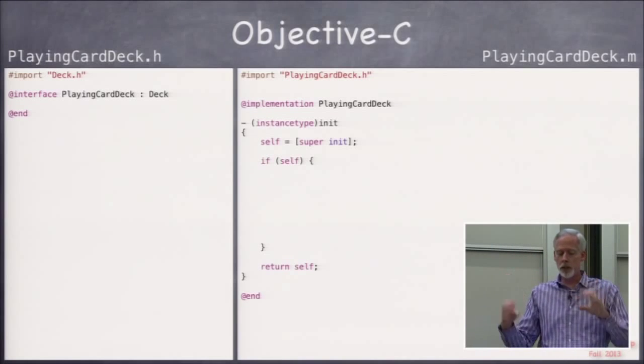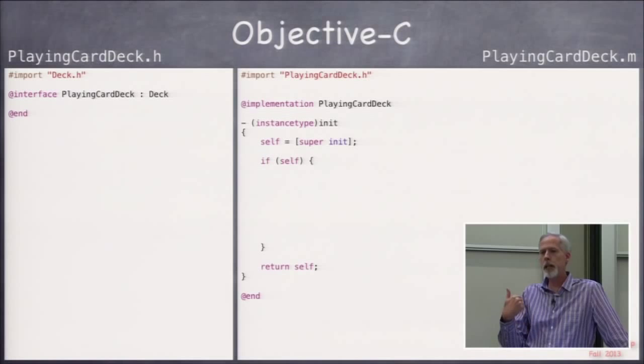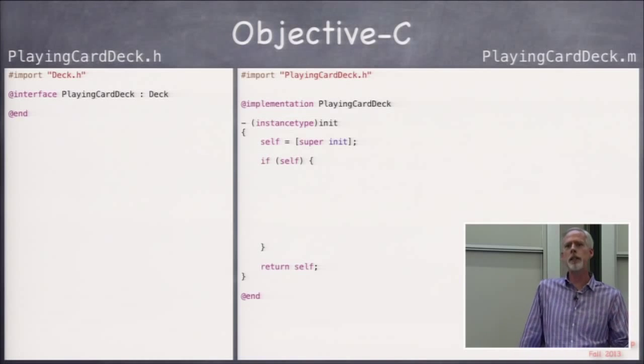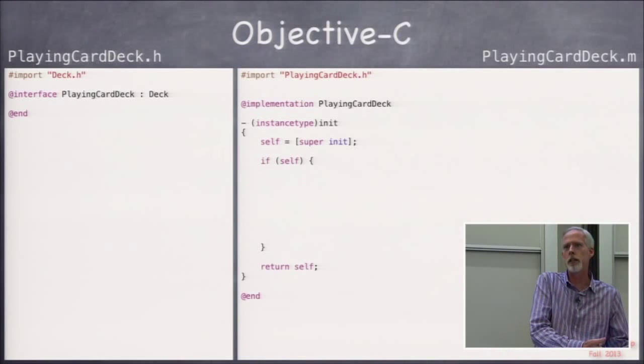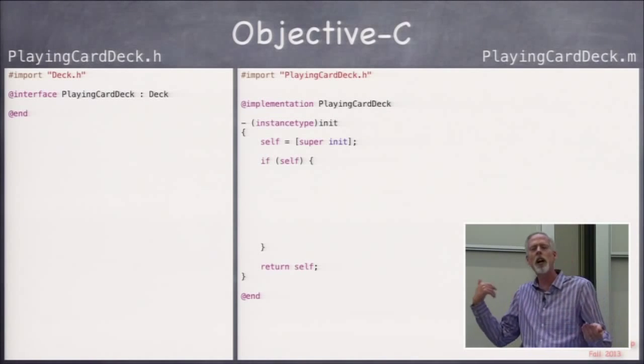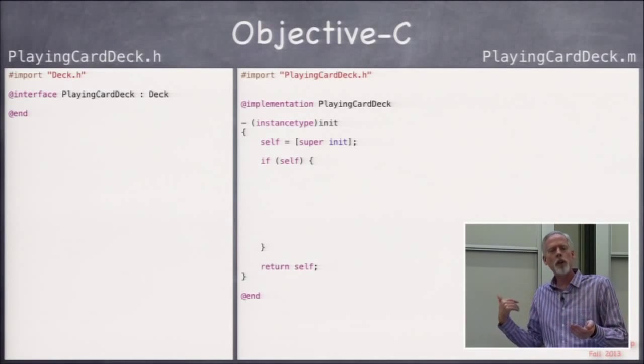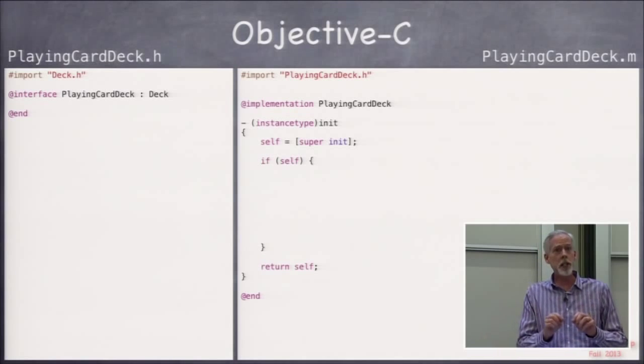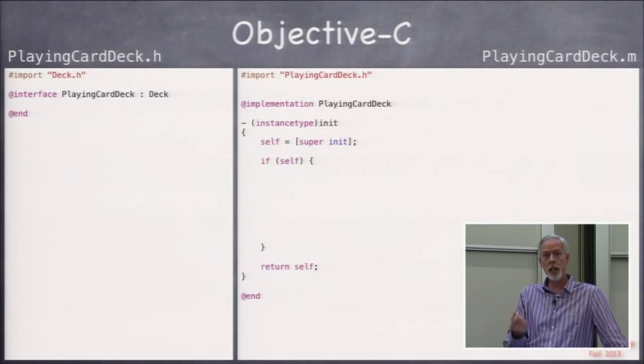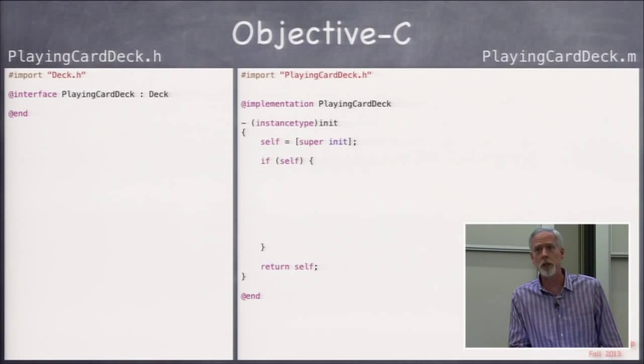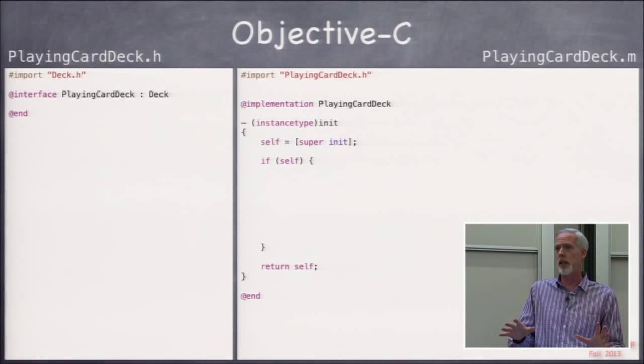But it can't really have its return type being playing card deck star, because it inherited this from NSObject, and NSObject already defined it as NSObject star. So it's kind of weird that you're inheriting a method whose return value would have to change every time you overwrote it, so they invented this new thing. This is new for iOS 7, by the way, called instance type. And what instance type means is this is going to return an object that is of the same instance as, same type, same class type, as the object you sent this message to. Which makes perfect sense for init.